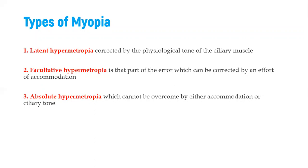So we have different types. We have latent hypermetropia—hypermetropia is the other name for hyperopia. So these are actually types of hyperopia, not myopia. We have latent hypermetropia, which is normally corrected by a physiological tone of the ciliary muscle. And then we have facultative hypermetropia,